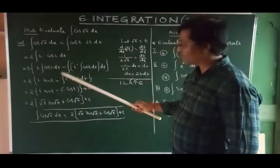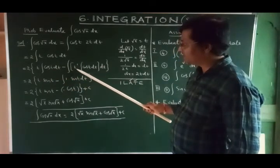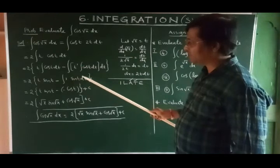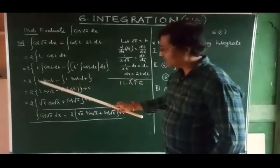sine t minus d/dt of t, that is 1, integral cos t dt, sine t, whole dt.